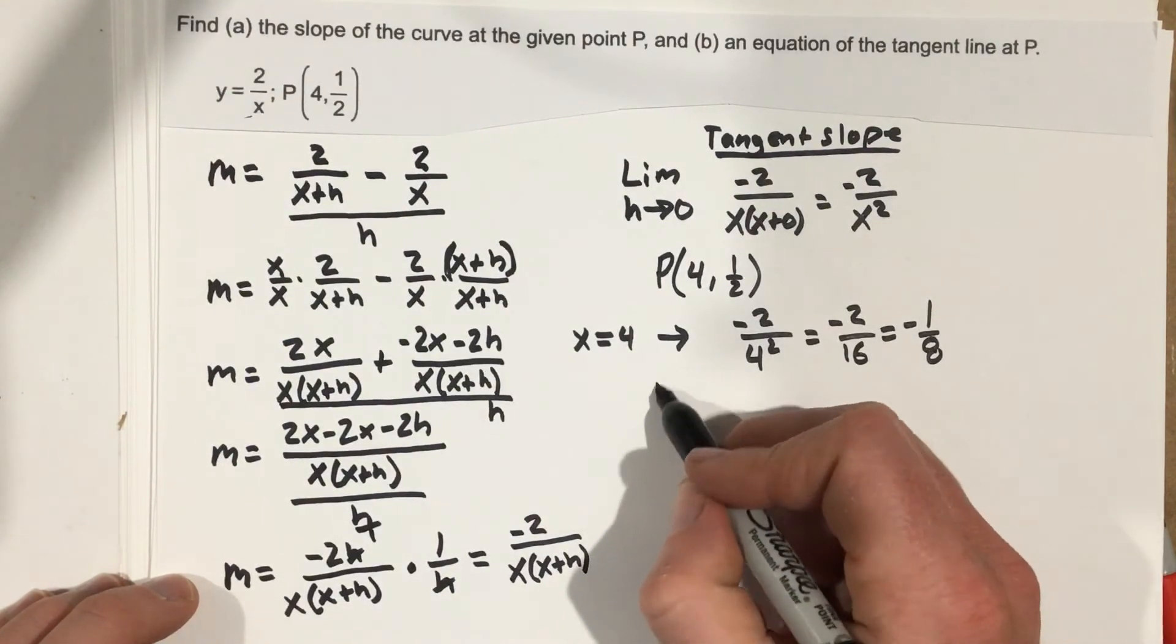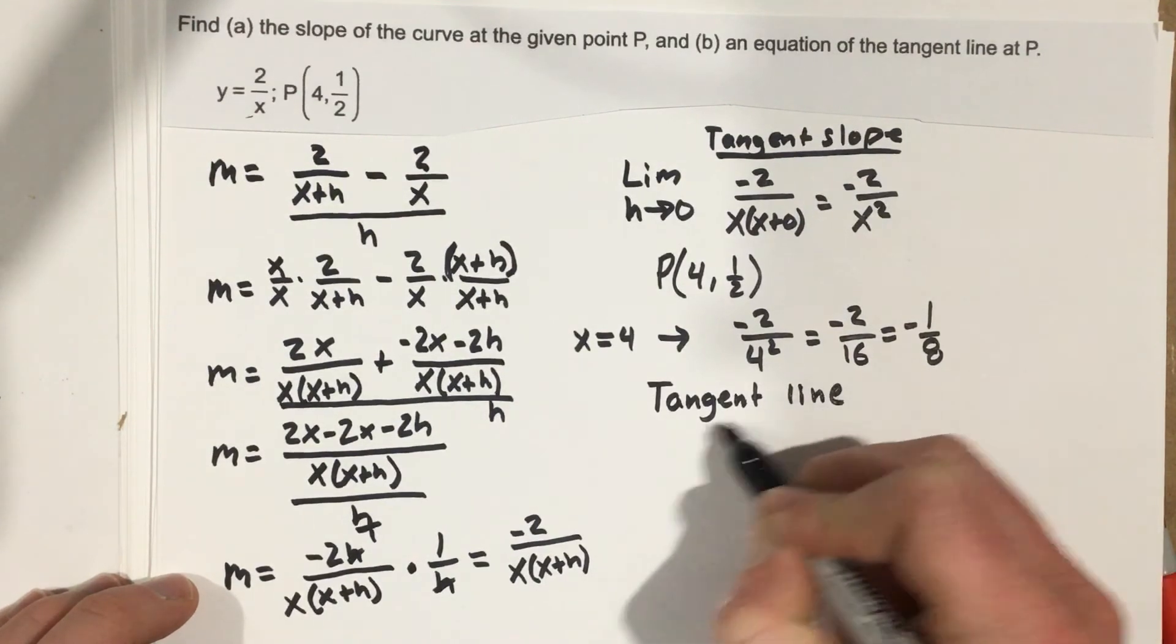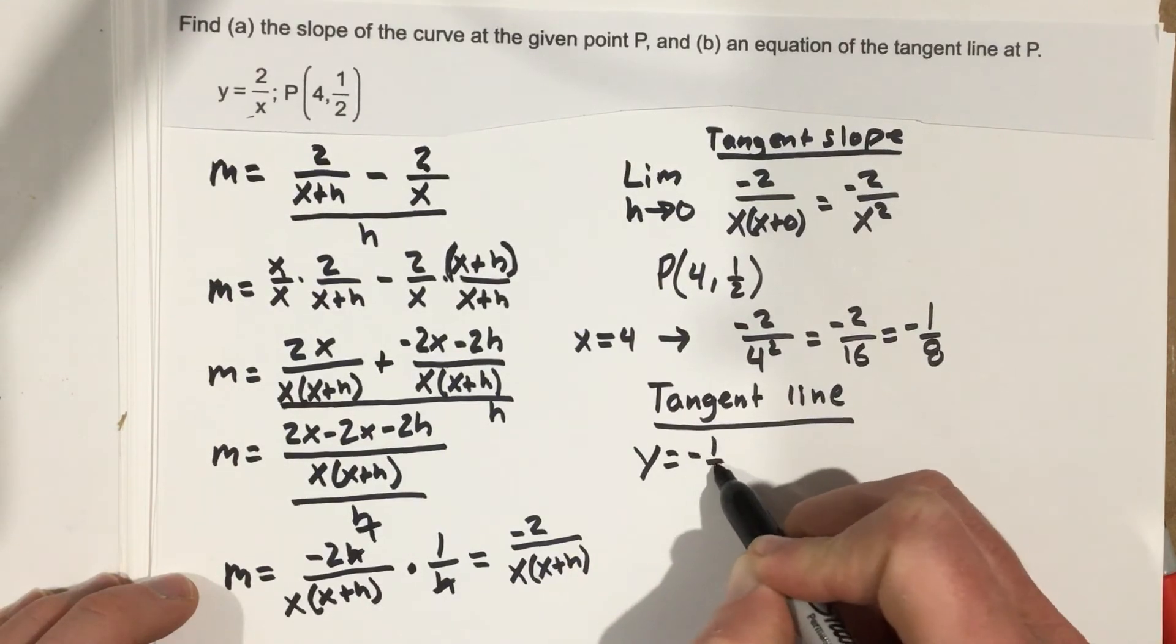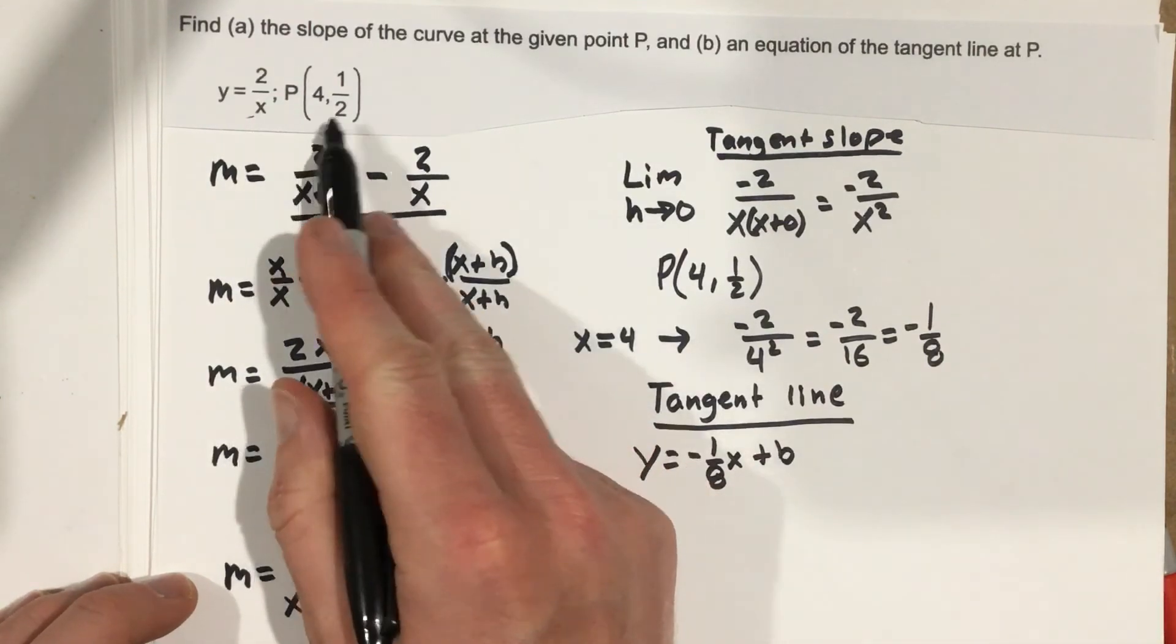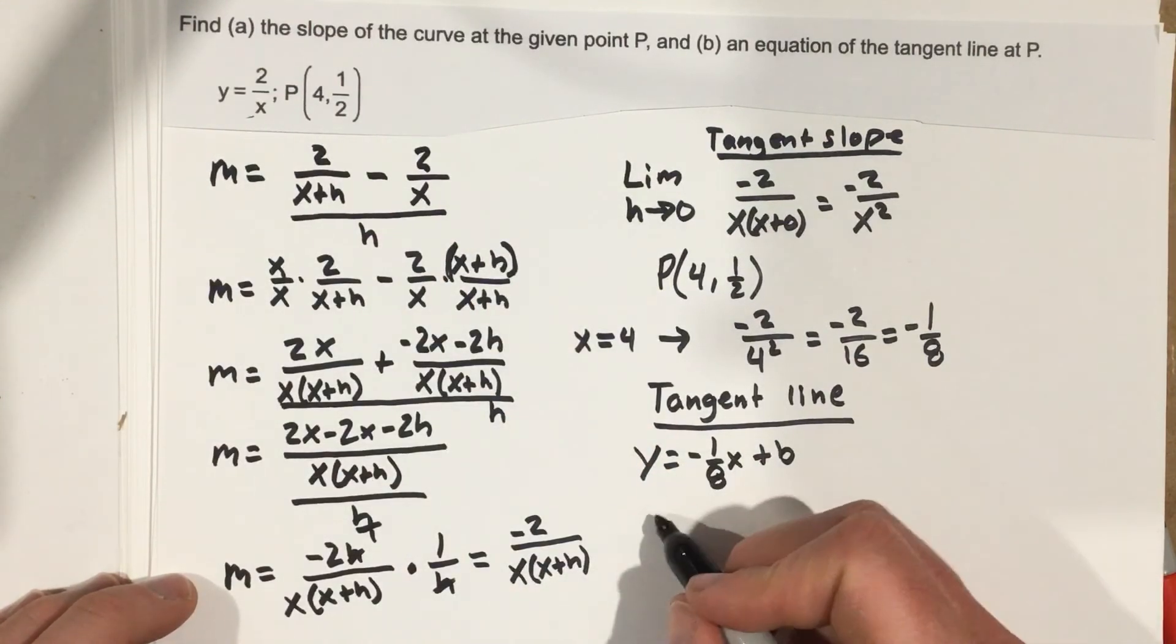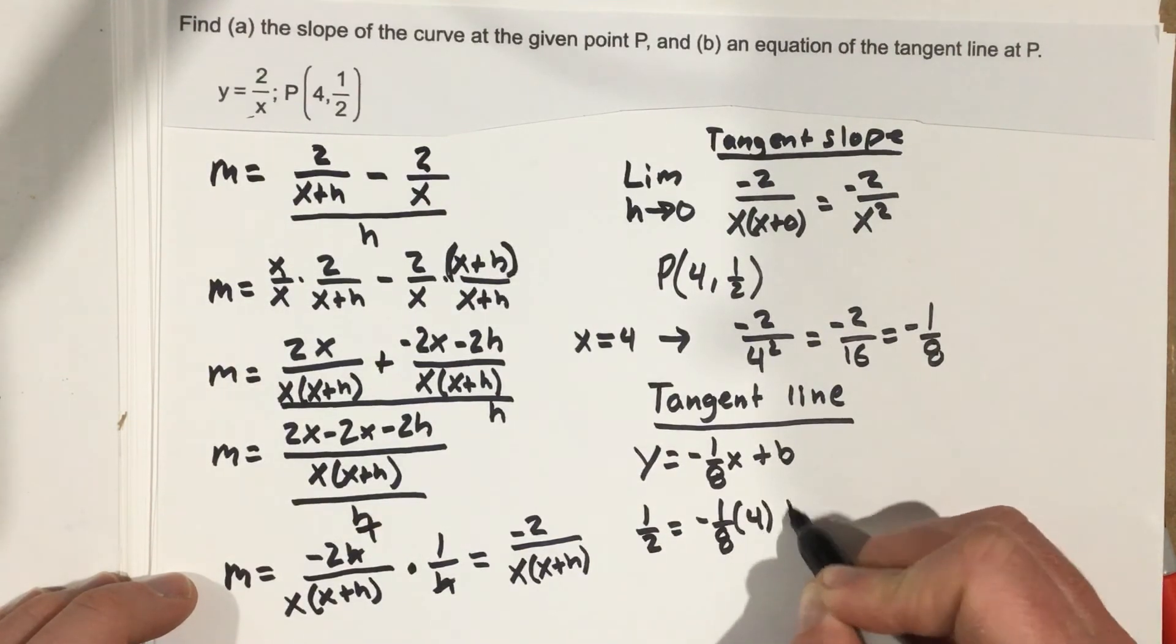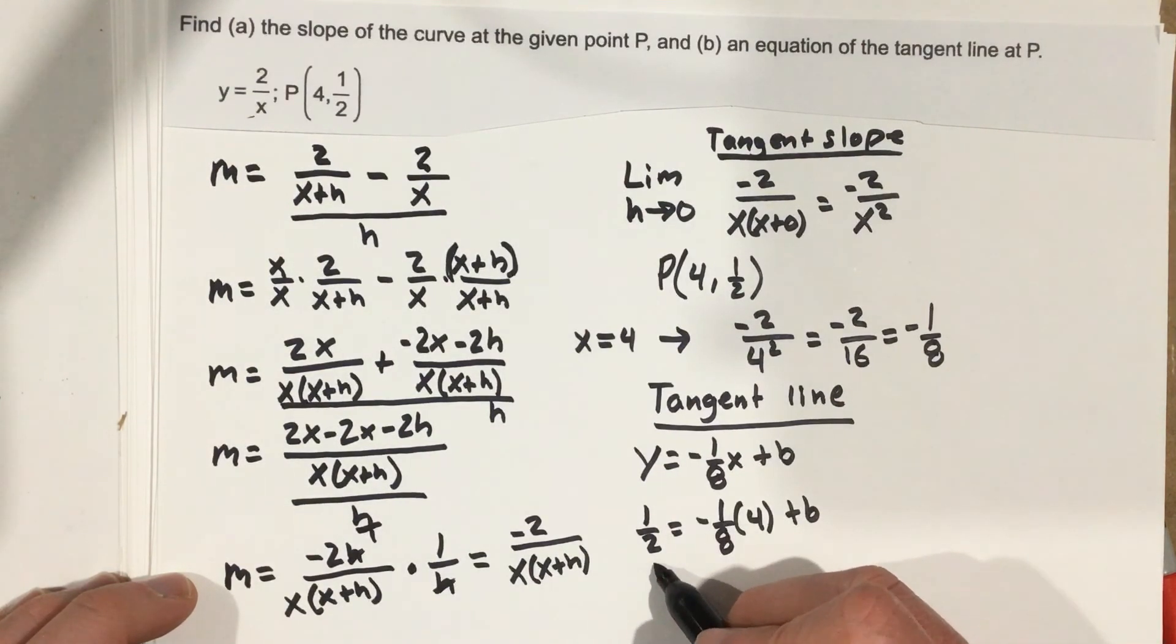Now we can do the tangent line. And I'm going to get y equals negative 1/8 x plus b. And then I'm going to plug in 4, 1/2 to find b. So I get 1/2 equals negative 1/8 times 4 plus b.